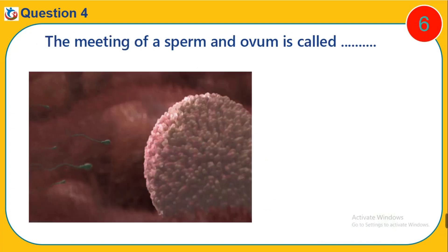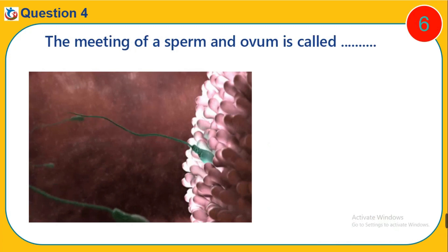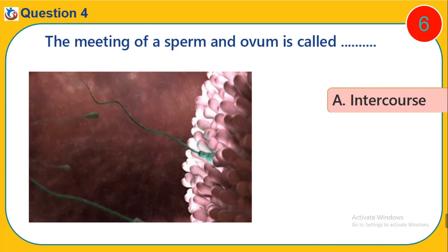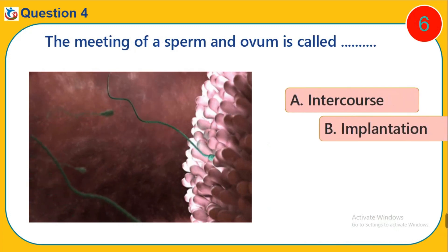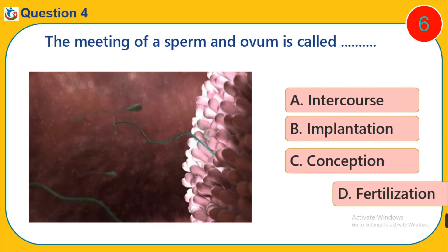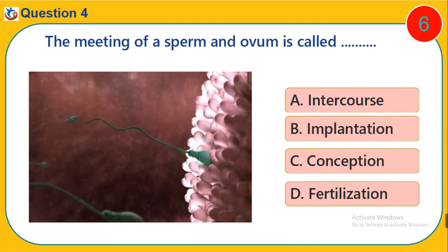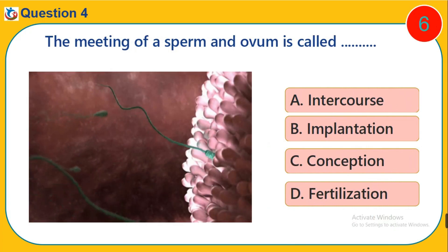Question 4. The meeting of a sperm and ovum is called dash. A. Intercourse. B. Implantation. C. Conception. D. Fertilization.